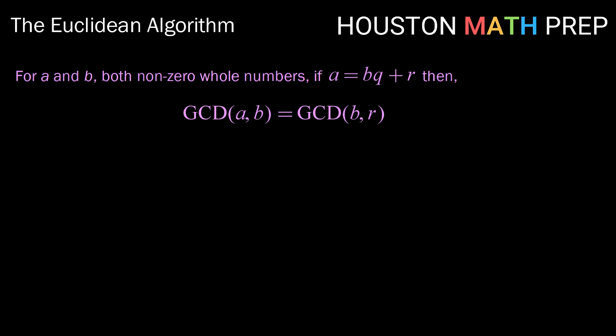If we have A and B, both non-zero whole numbers, and if A can be rewritten as B times Q plus R, that is, if A and B are not multiples of each other, then the greatest common divisor of A and B is equivalent to the greatest common divisor of B and R, where B is the smaller of the two numbers, and R is the remainder when the division of those two values is complete.